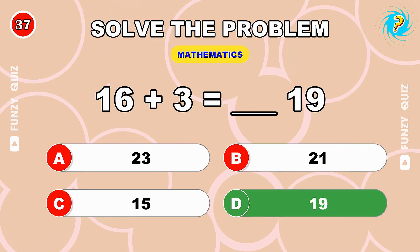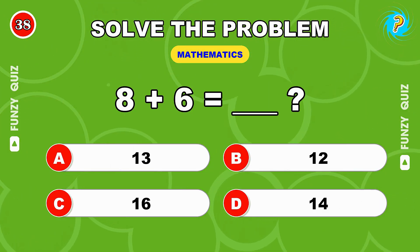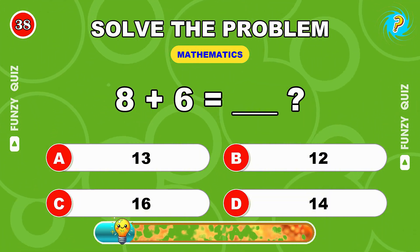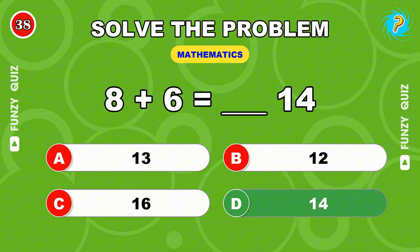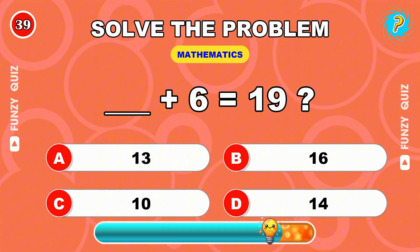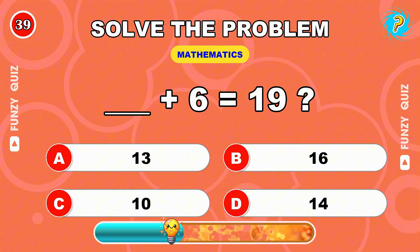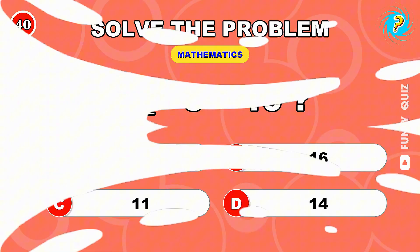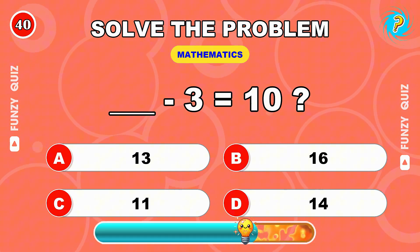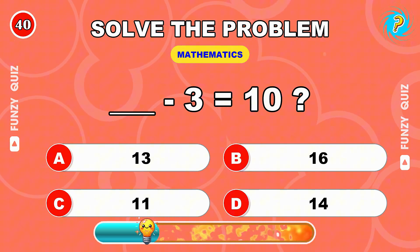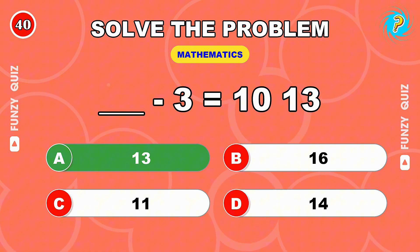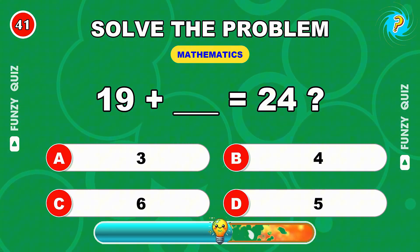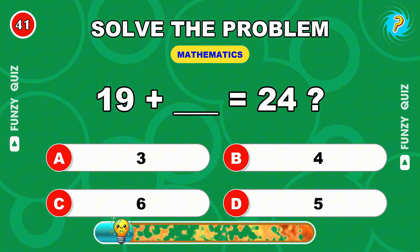19, well played. What's 8 plus 6? 14, superb. What number plus 6 equals 19? 13, right answer. What number minus 3 equals 10? 13, keep it up. 19 plus what makes 24? 5, correct.